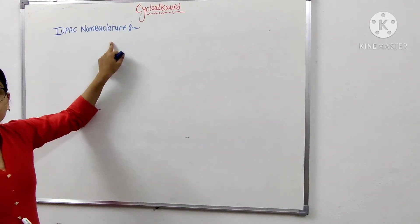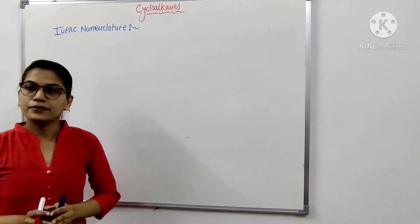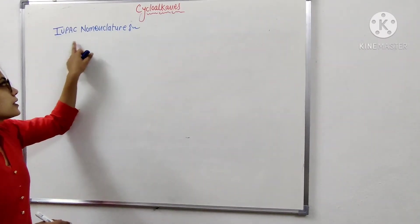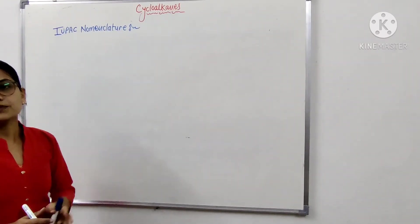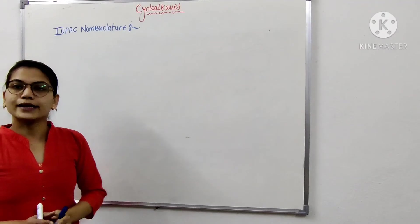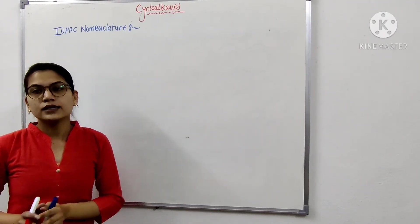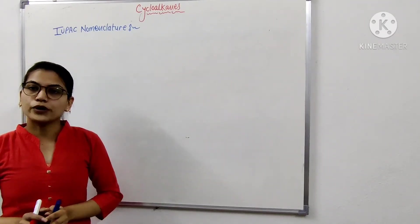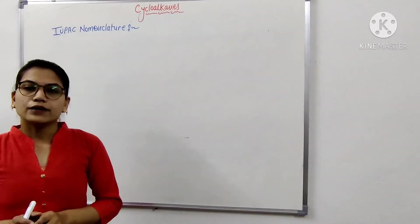Last class we discussed about the nomenclature of common names. Now we discuss about the IUPAC nomenclature. The first point and second point were discussed in the last class. Now we start from the third point of IUPAC nomenclature.